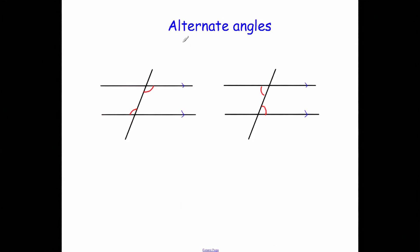First, alternate angles, or Z angles, are the same as each other. If you were to measure both angles you'd realise they're the same size — if this one's 100 degrees, this one's 100 degrees; if this one's 80 degrees, this one's 80 degrees. They're called alternate because they're alternate to each other. Some people call them Z angles because the angles inside of the Z are the same, but the proper name is alternate angles and that's what you must use in an exam.